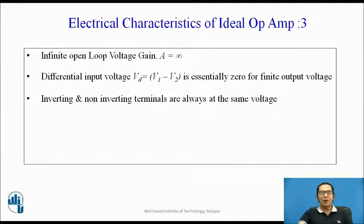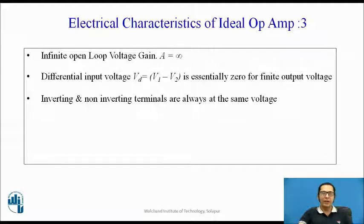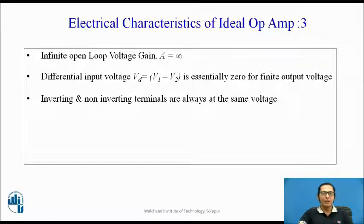The third characteristic of an ideal op-amp is that the open-loop voltage gain is infinite. Op-amp always tries to amplify the differential voltage VD, which is the voltage difference between the inverting and non-inverting inputs. If the open-loop voltage gain is infinite, it means that when the output voltage is some finite voltage, the differential input voltage must be zero. So, the inverting and non-inverting terminals of the op-amp are always at the same voltage. Practically, the gain is not infinite, but it has a very high value.